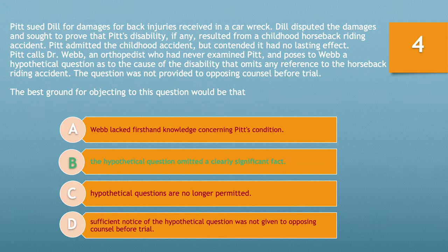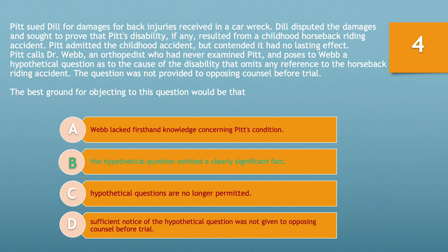In this case, Pitt called Dr. Webb as an expert and posed a hypothetical question that omitted any reference to the horseback riding accident — the possible alternative cause of Pitt's disability and the main issue in the case. This hypothetical is misleading because it omits that clearly significant fact. Therefore, the best ground for objecting to this question is that the hypothetical question omitted a clearly significant fact.